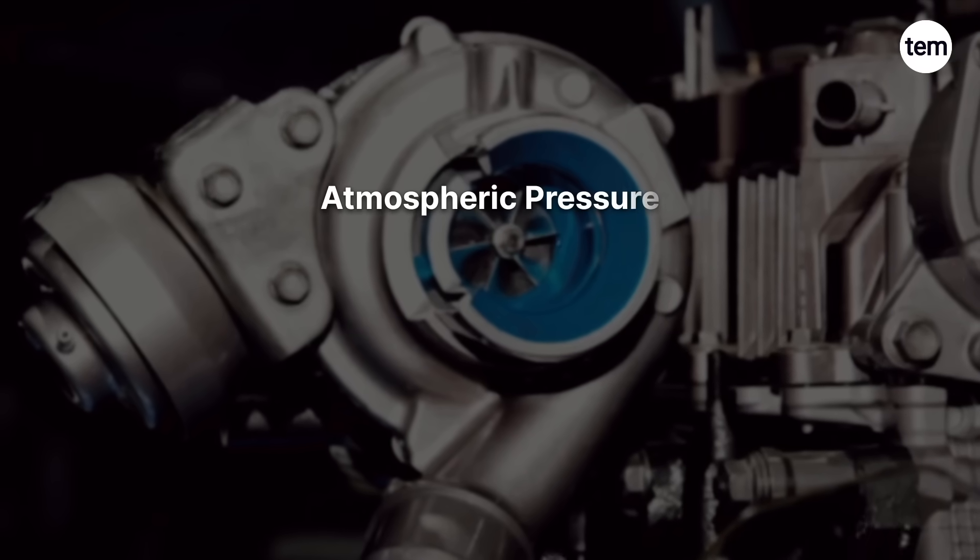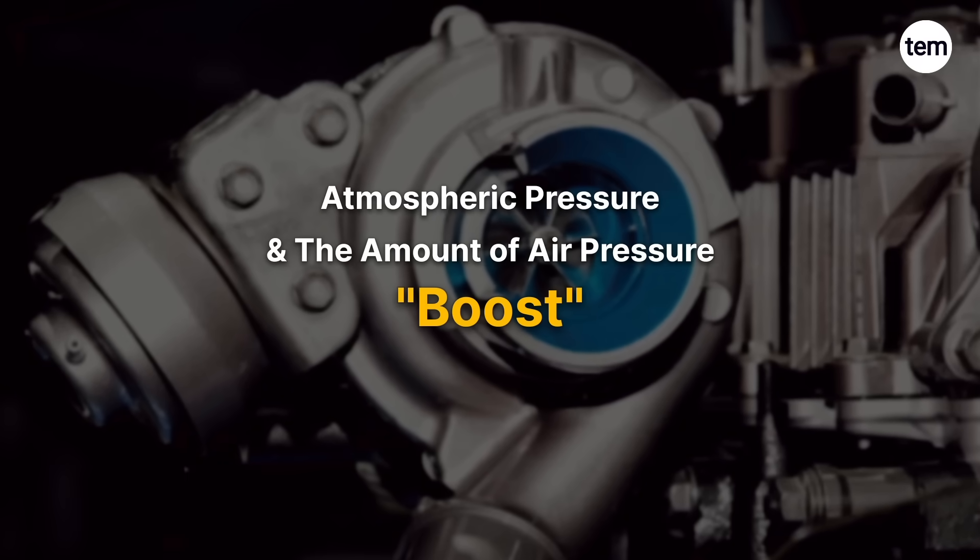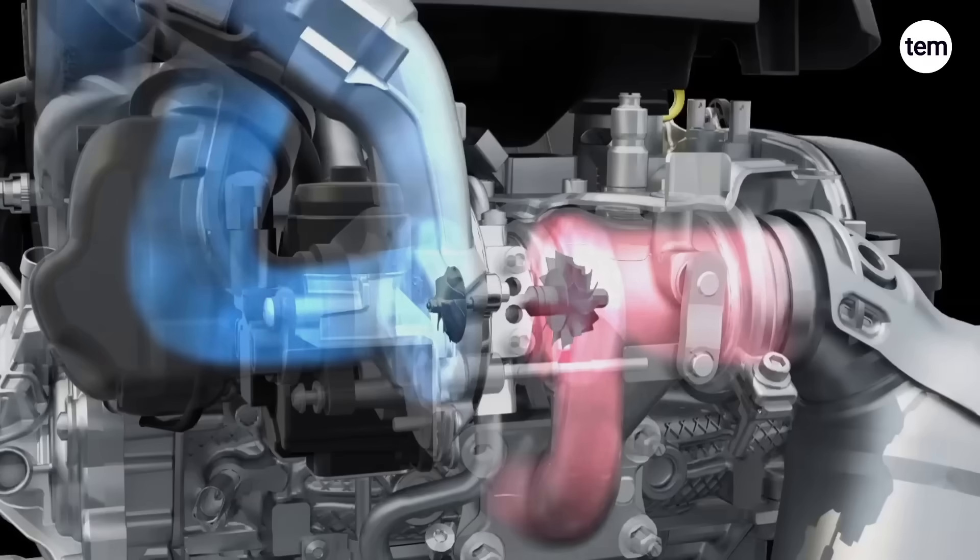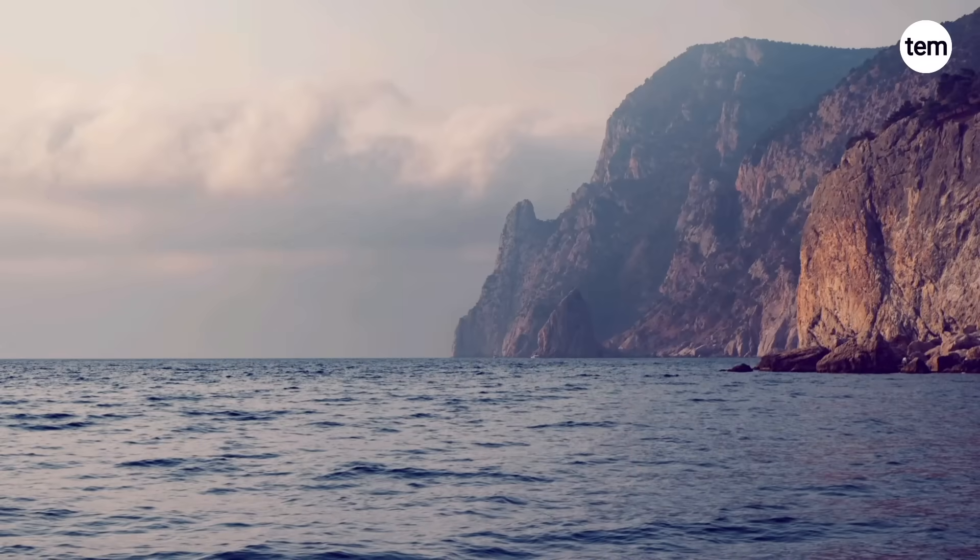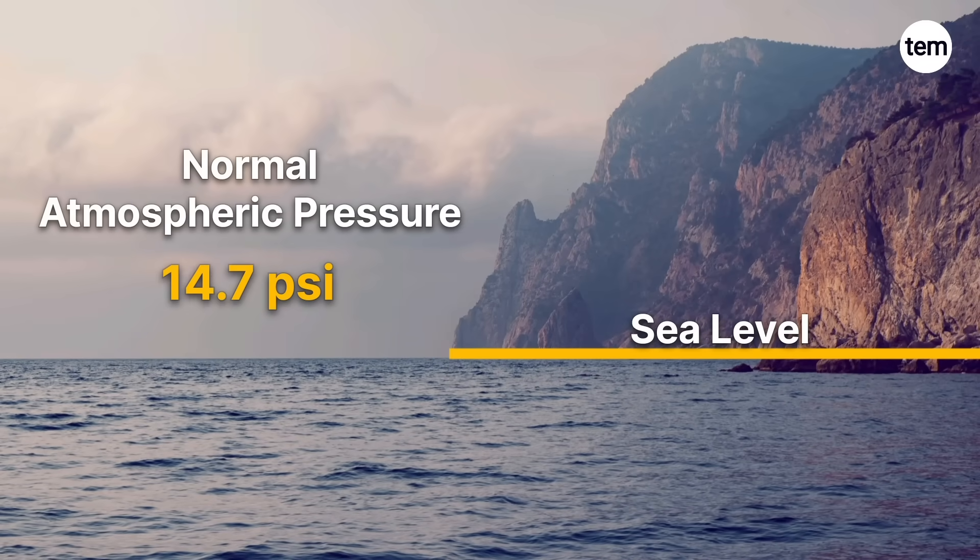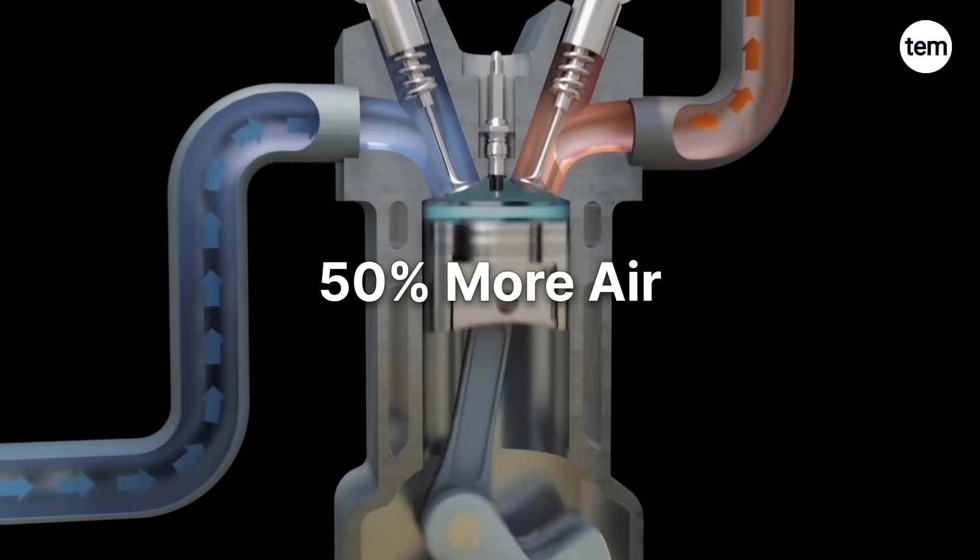The difference between atmospheric pressure and the amount of air pressure provided by the turbocharger is called boost, and it's measured in pounds per square inch. A typical turbocharger provides about 6 to 8 psi of boost. Since normal atmospheric pressure at sea level is around 14.7 psi, that means you're getting roughly 50% more air into the engine.